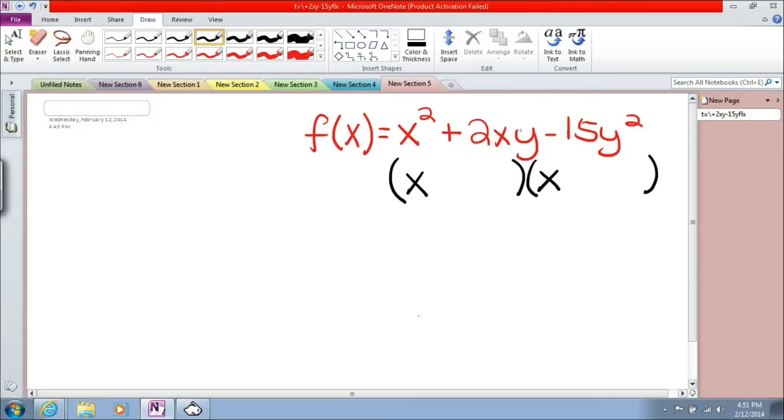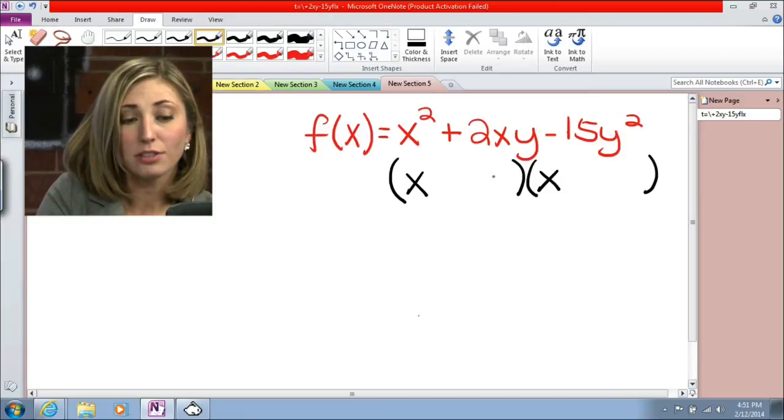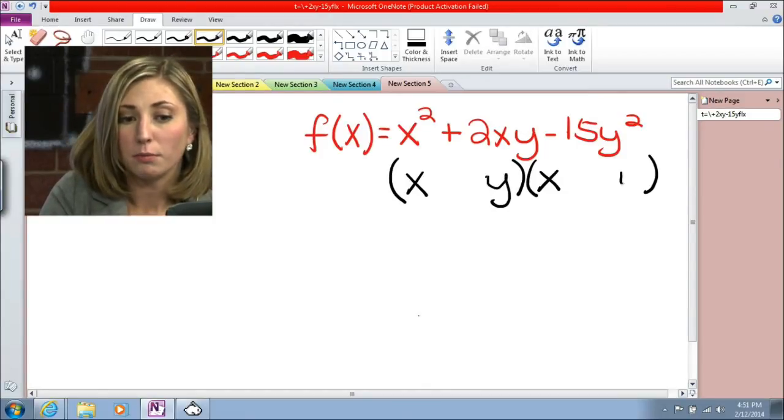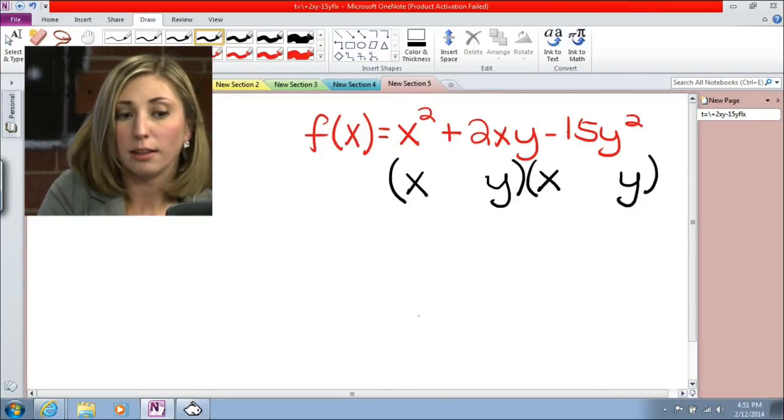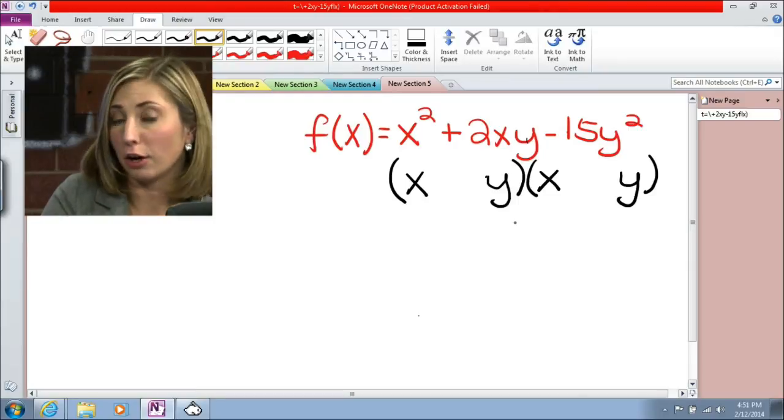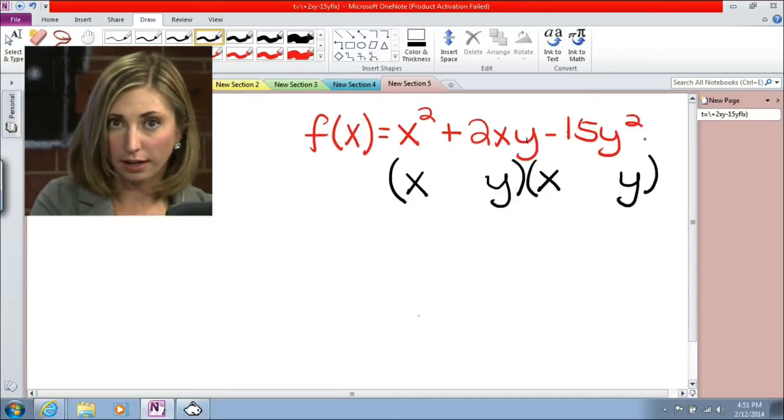Now, if you look at the rest of your terms, your middle term has x in it, and it also has y. And your last term has y squared. So what that means is our last terms in our factors have to include y, because if they don't include y, then we aren't going to get this y showing up in our middle, our second, and our third term. So we have x, we have y. We've taken care of that.